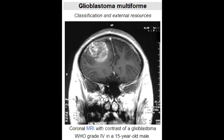The adult primary brain tumors include glioblastoma multiforme, which is grade 4 astrocytoma, meningioma, schwannoma, oligodendroglioma, and pituitary adenoma. What is glioblastoma multiforme?